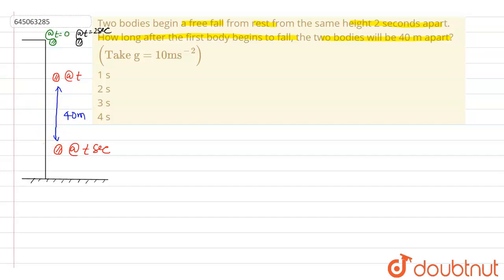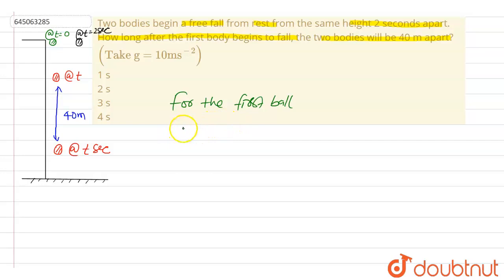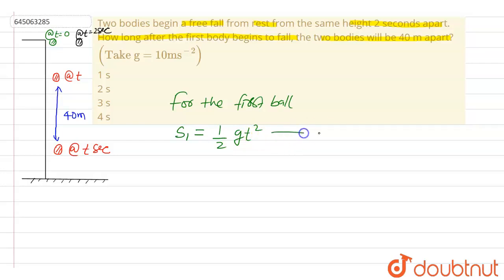We will deal with the two balls individually. For the first ball, the distance traveled in t seconds: since this is the case of free fall, we can simply use the formula S1 = ½gt². So in t seconds it will travel a distance of ½gt². This is equation one.